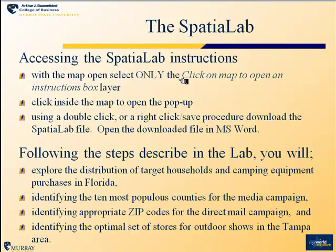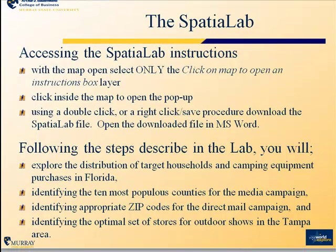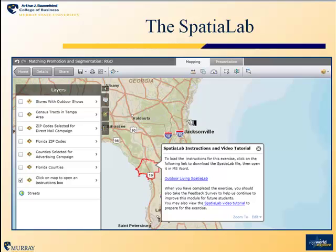This spatial lab is accessed using a map available in the ArcGIS and ResearcherGIS online facilities. When you open that map, you will see only a 'click on a map to open an instructions block' layer ready to go. If you click inside the map, you will receive instructions on how to download the spatial lab itself and open it in Microsoft Word. This visual shows what that map looks like and how you get to those instructions, and also includes a link allowing you to return to this video tutorial if needed.